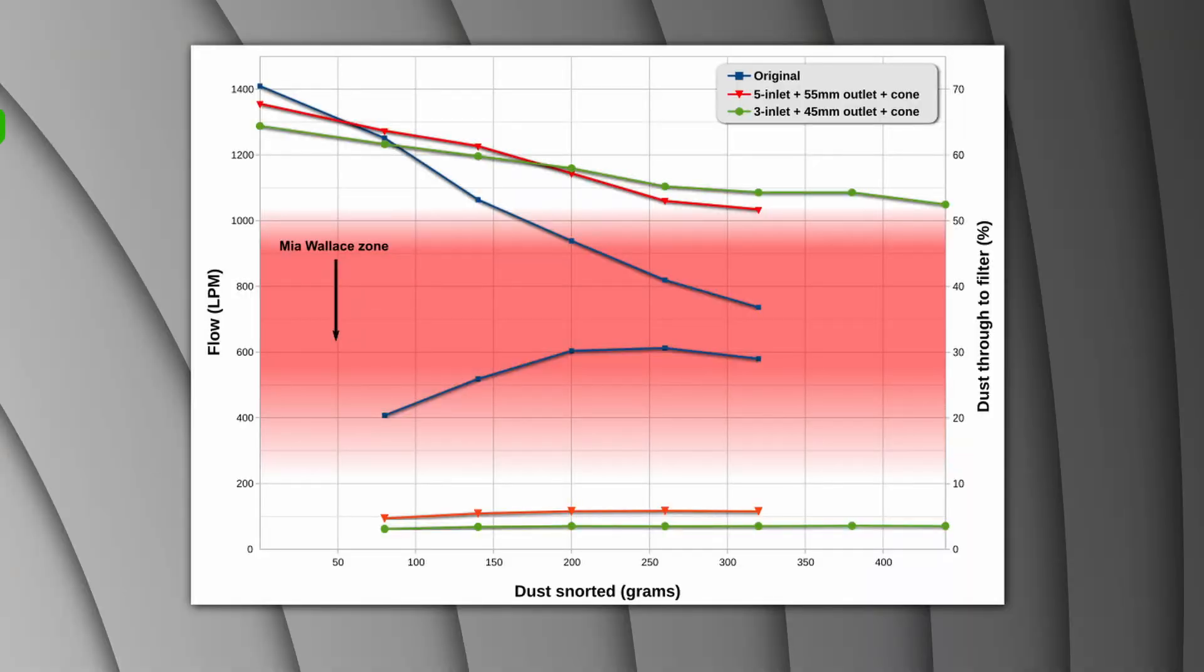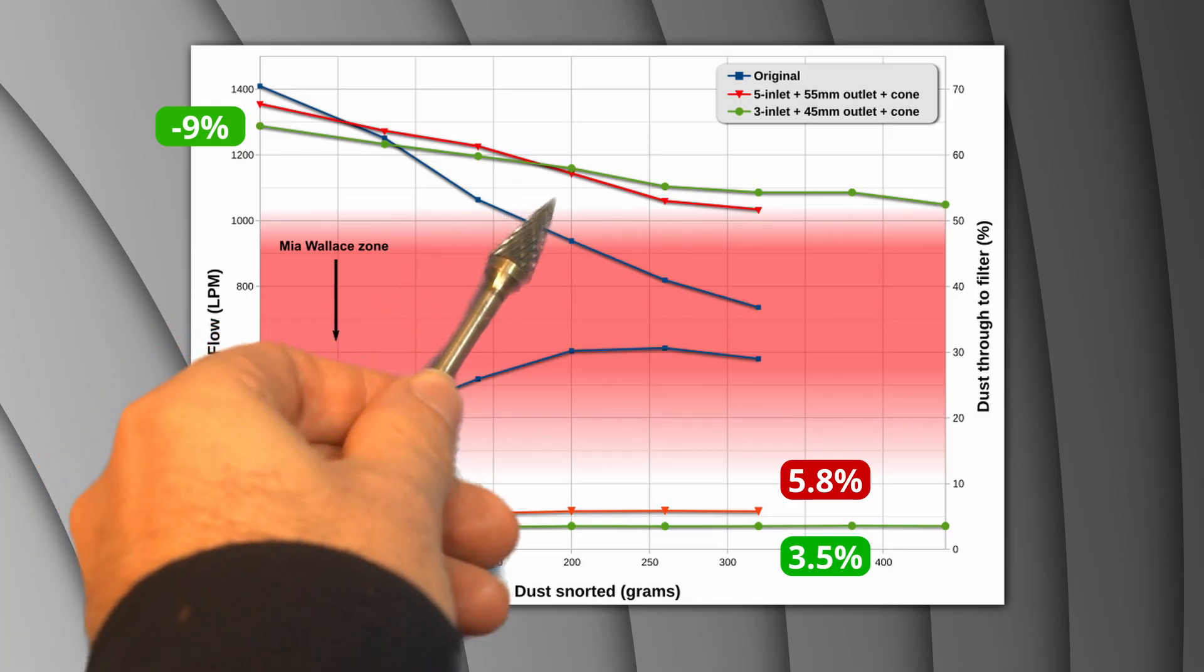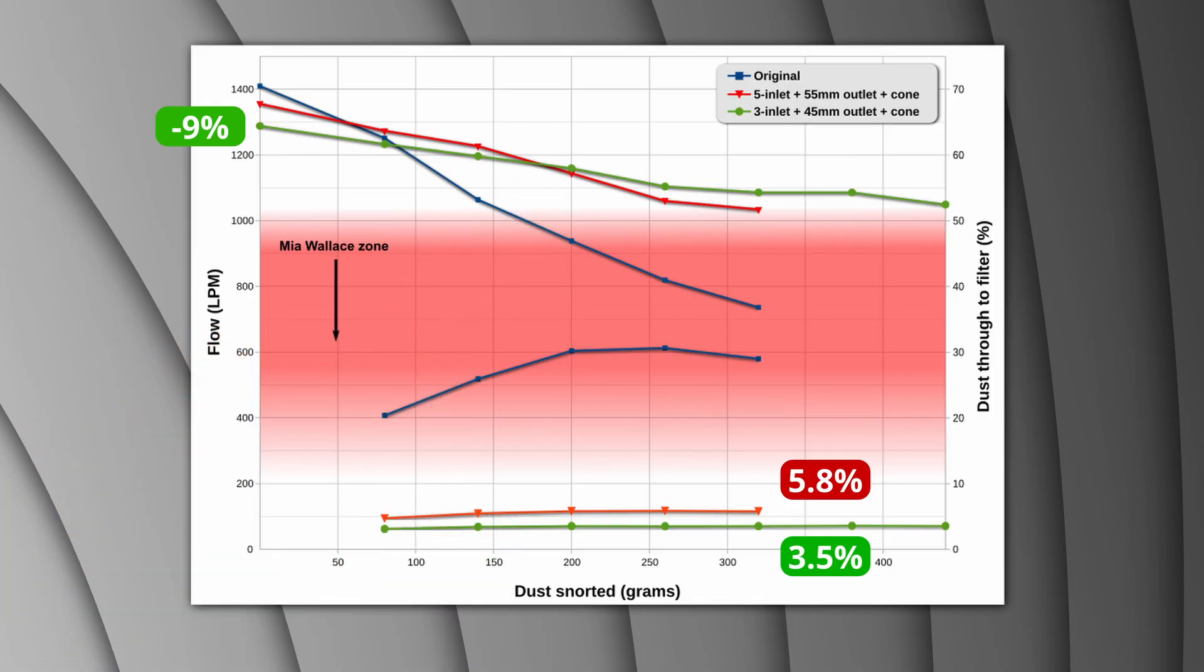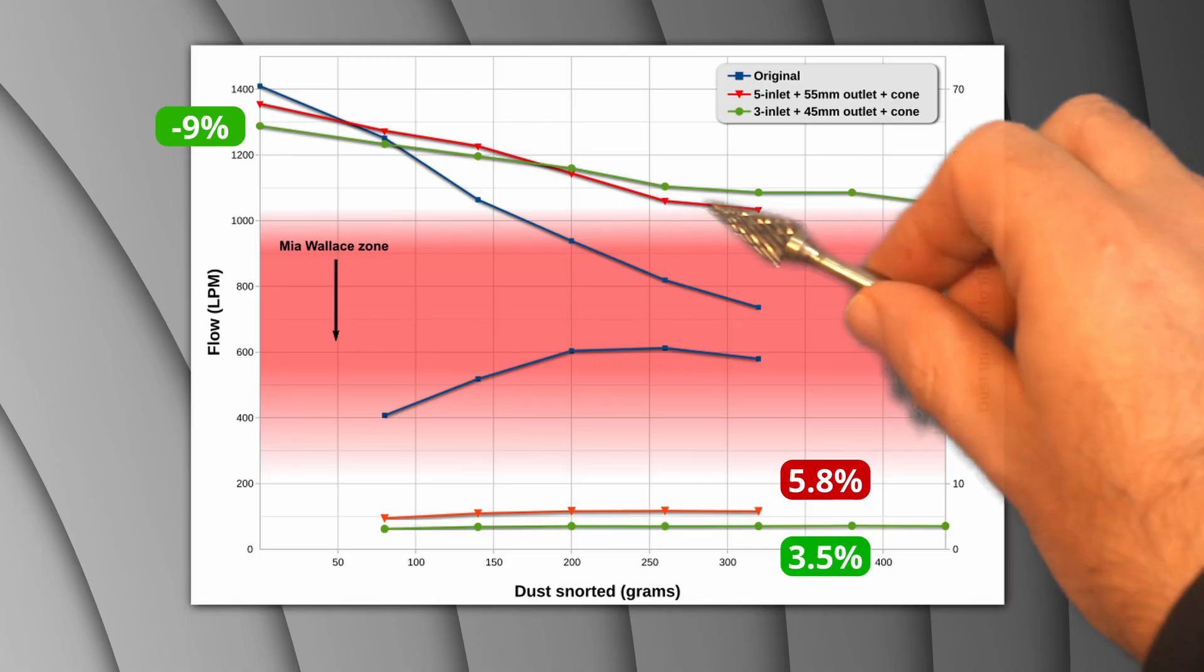This reduced the airflow by 9% compared to the original, but still matched the original vacuum after just 80g of dust. Filtration efficiency was much better at only 3.5%, which allowed the 3 inlet mod to surpass the 5 inlet mod after 200g of dust. It worked well enough that I took it to 440g where it was still going strong.